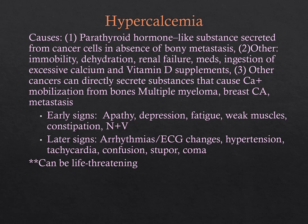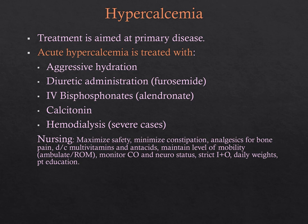Hypercalcemia results from secretion of a parathyroid hormone-like substance and occurs most frequently with squamous cell carcinoma of the lung, head and neck, cervical and esophageal cancers, lymphomas, and leukemias. Treatment includes aggressive hydration, diuretic administration like furosemide, bisphosphonates like alendronate, calcitonin, or in severe cases hemodialysis. Nursing goals include maximizing safety, minimizing constipation, and providing analgesics for bone pain.